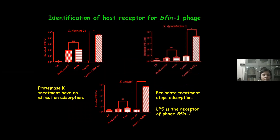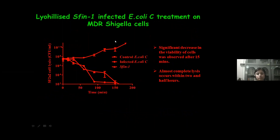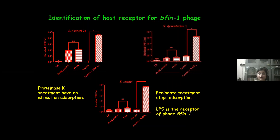We investigated the receptor molecules on the host cells — that is, where phage SF-1 binds on the host cell receptor, whether it is protein or carbohydrate, meaning LPS. Cells were treated with either proteinase K or periodate. Proteinase K treatment had no effect on phage adsorption, whereas periodate treatment stopped adsorption. This proves that LPS is the receptor of phage SF-1.